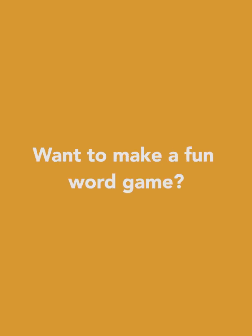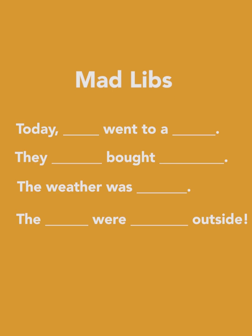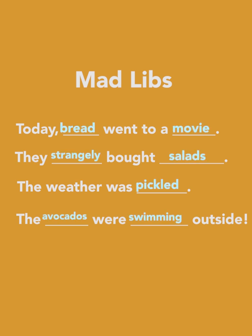Hey hopscotchers! Want to make a fun word game with your friends and family? Well, look no further! In this video, we're going to make Mad Libs. Mad Libs is a collection of incomplete sentences, and you have to fill in the blanks with random words of your choice, like nouns, verbs, and adjectives. After you've filled in all the blanks, you read everything all together, and the result could be pretty silly!